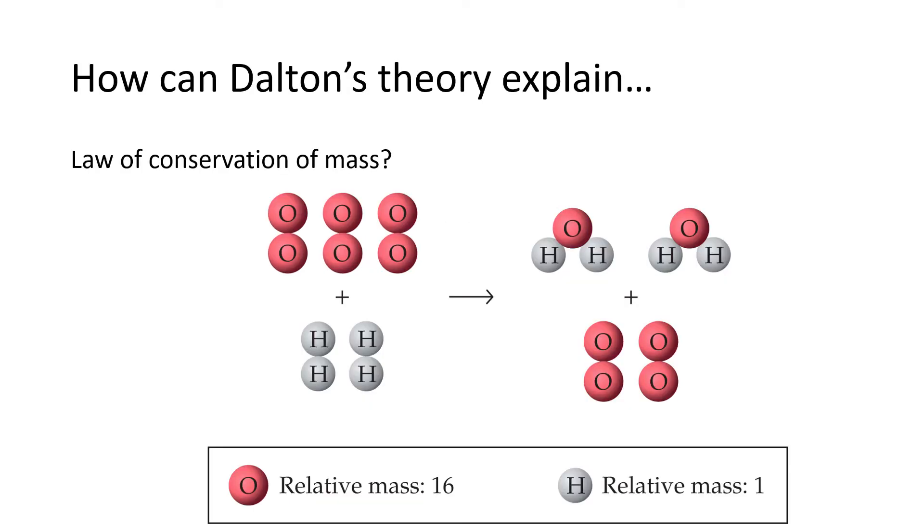So how can Dalton's theory explain the law of conservation of mass? Well in this diagram showing the atomic version of a chemical reaction between oxygen and hydrogen, we're taking six atoms of oxygen arranged in three molecules and reacting with four atoms of hydrogen arranged in two molecules and that's going to give us two molecules of water with two molecules of oxygen left over.